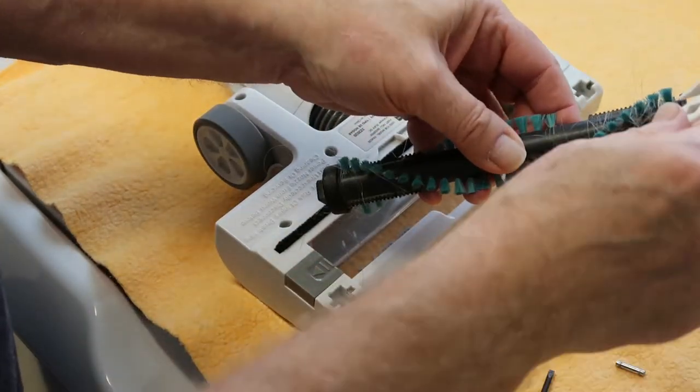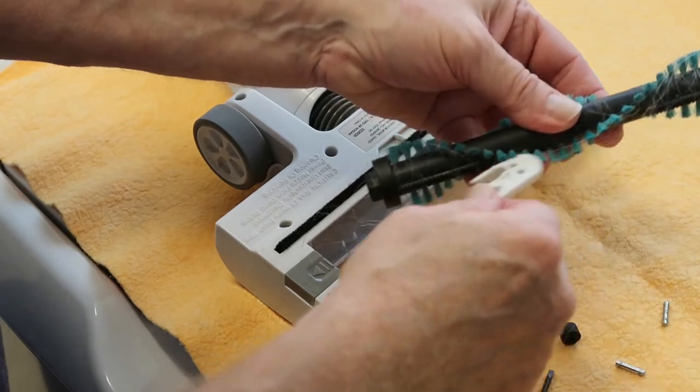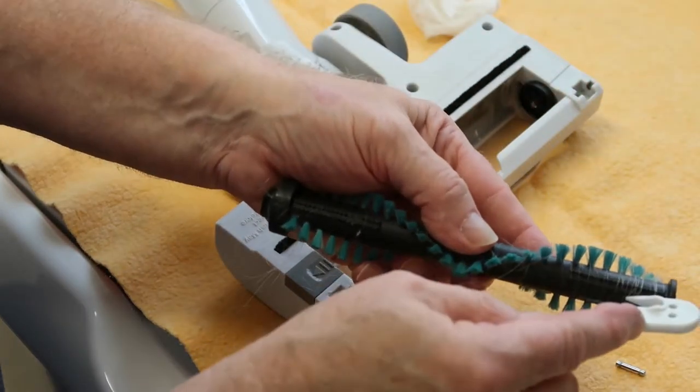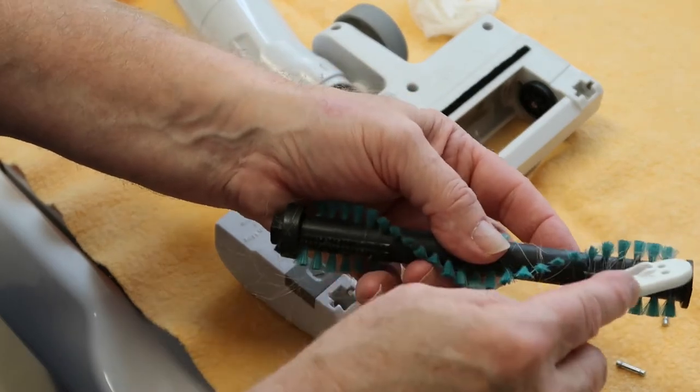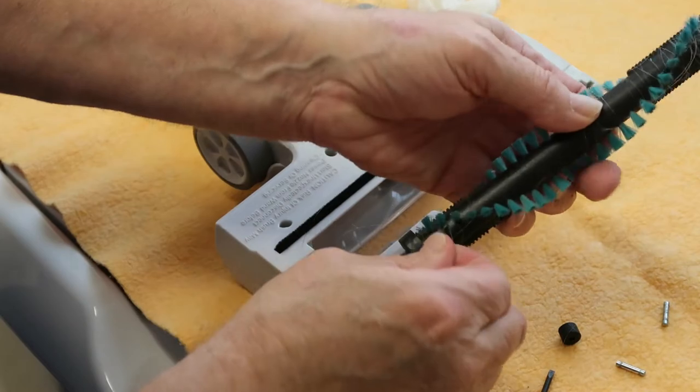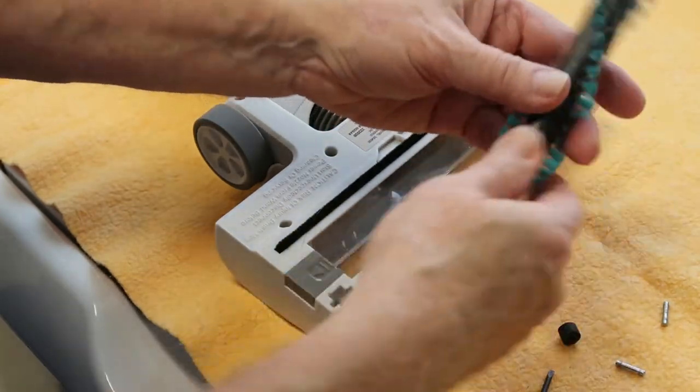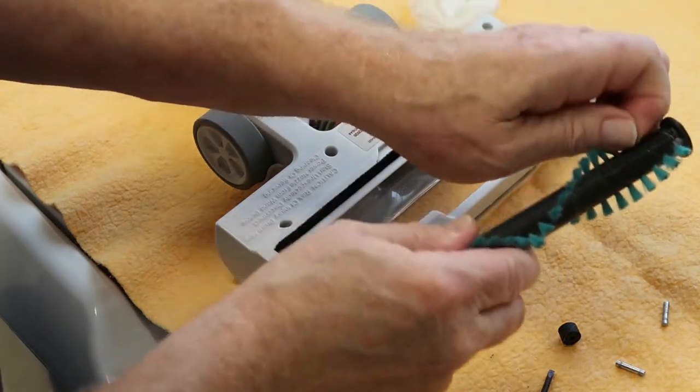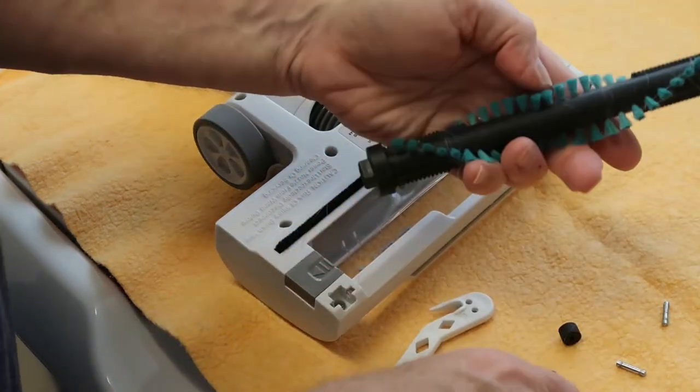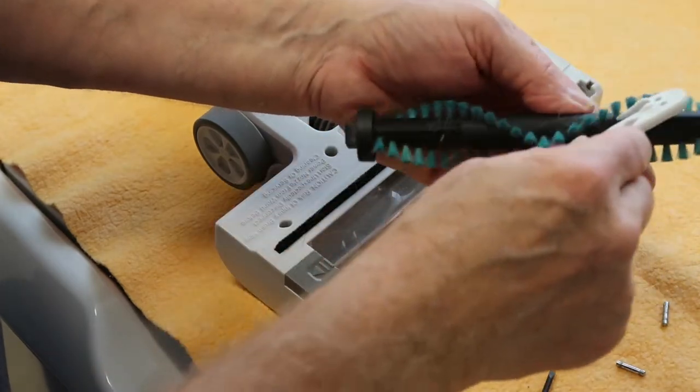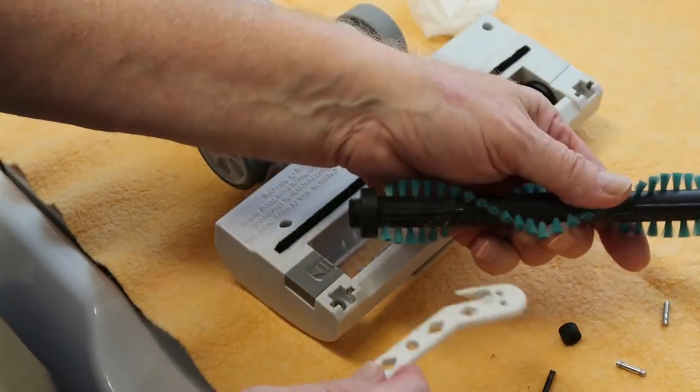But you want to get all of anything that's wrapped around here, whether it be animal fur or if you live with people who have long hair. It's amazing how much people shed, just like animals. So we're going to take all that off. This is probably the most time consuming. It's going to take a couple of minutes. So I'm just going to jump ahead to where I get this whole thing cleaned off.